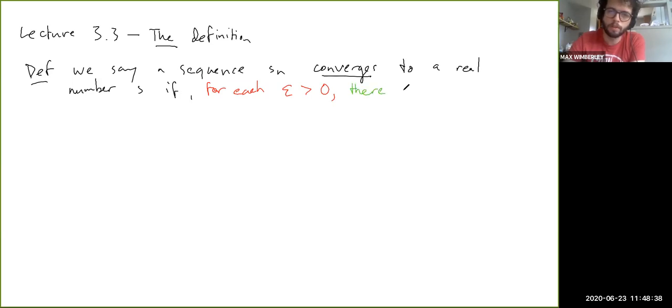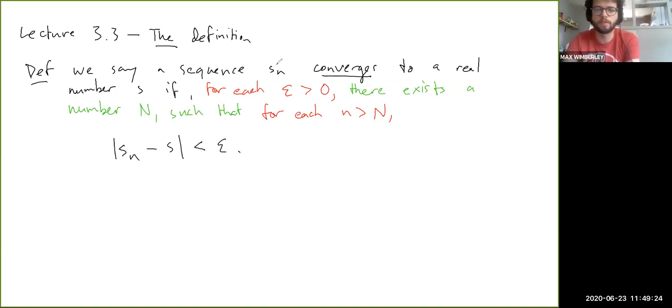there exists a number N such that for each n greater than N, we have the following: absolute value of s_n minus s is less than epsilon.